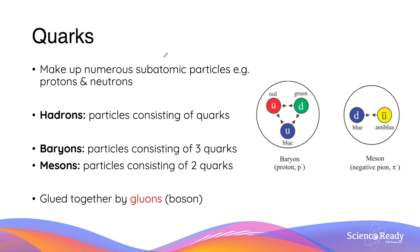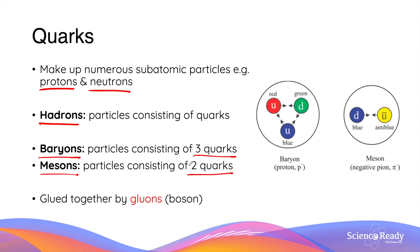Quarks make up numerous subatomic particles, including protons and neutrons. Hadrons are particles that consist of quarks, and there are two types of hadrons: baryons, which are made of exactly three quarks, and mesons, which consist of one quark and one antiquark. Within these particles, quarks are held together by a type of boson called a gluon, which is a force-mediating particle.